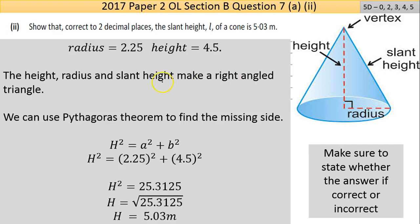If you look at it straight on, it makes a right-angle triangle. The radius was 2.25 and the height was 4.5. We're looking at using Pythagoras theorem to find the length of the hypotenuse, which is the same as the slant height.